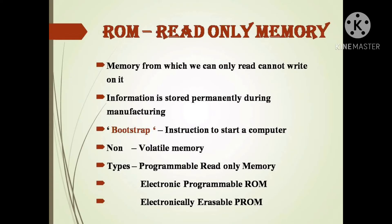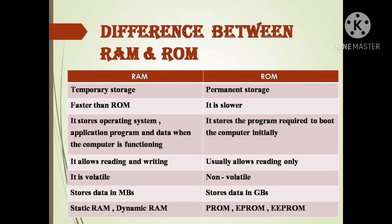The difference between RAM and ROM: RAM is temporary storage, ROM is permanent storage. RAM is faster than ROM. RAM stores the operating system, application programs, and data while the computer is functioning. ROM stores the program required to boot the computer initially — the bootstrap. RAM allows both reading and writing, whereas ROM usually allows reading only.